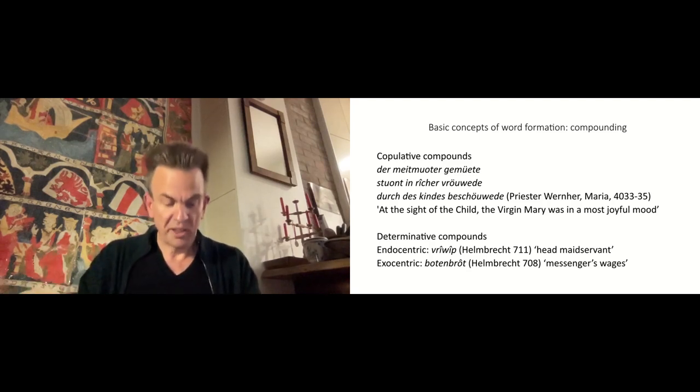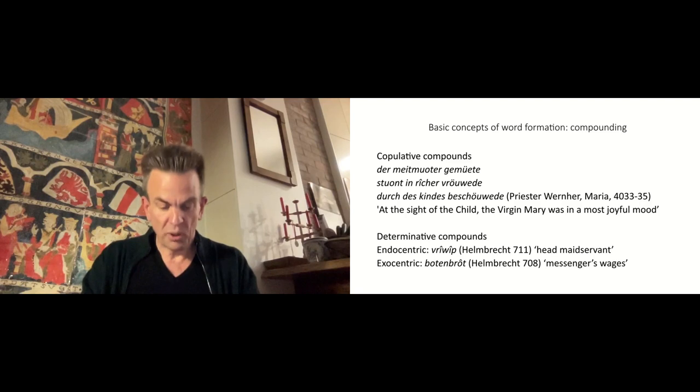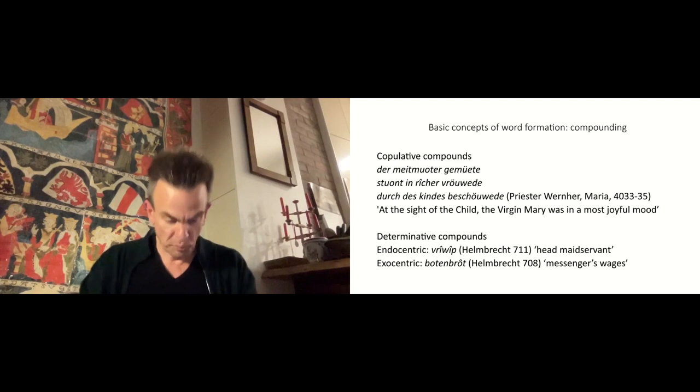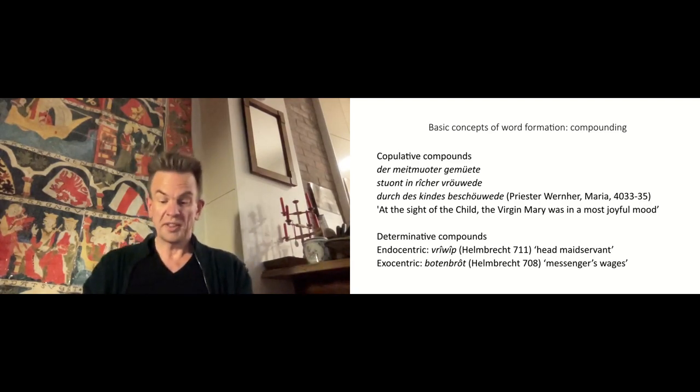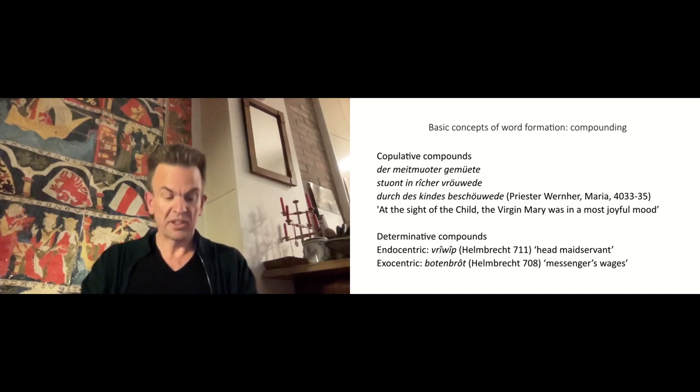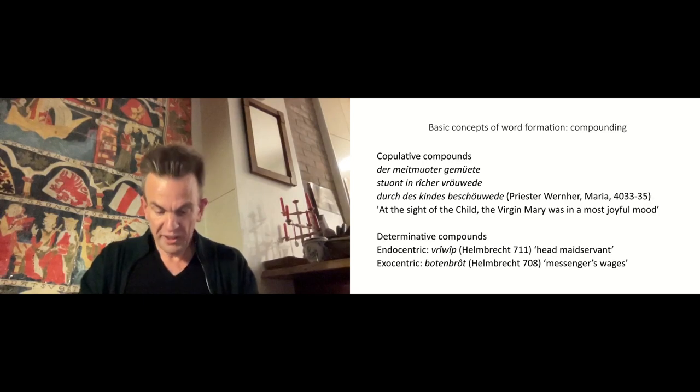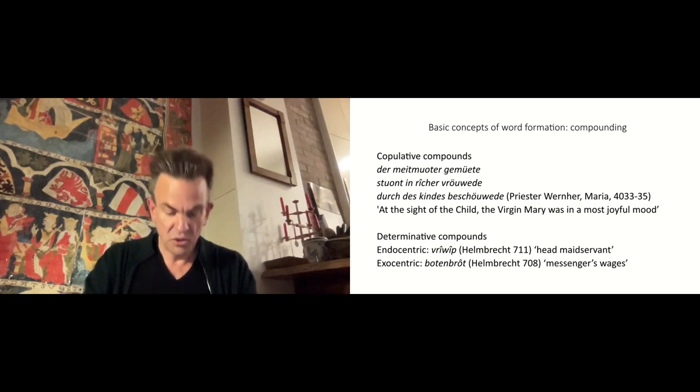Endocentric determinative compounds determine a part of what is denoted by the root word. A vrouwip is a wip, whereas this is not the case with exocentric determinative compounds. A botenbrot, for example, is not a loaf of bread, but denotes a messenger's wages using metonymic transfer.